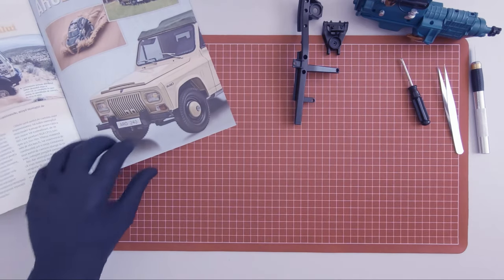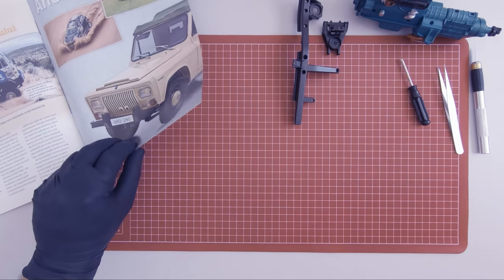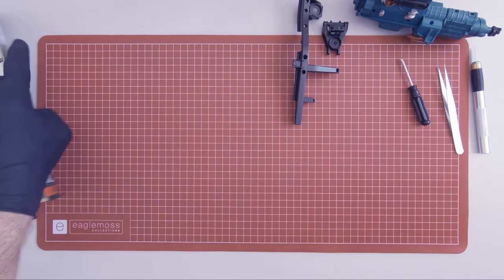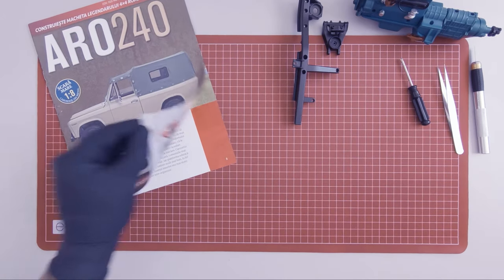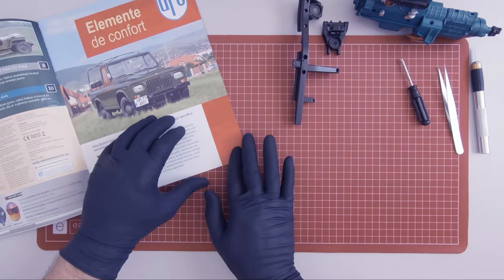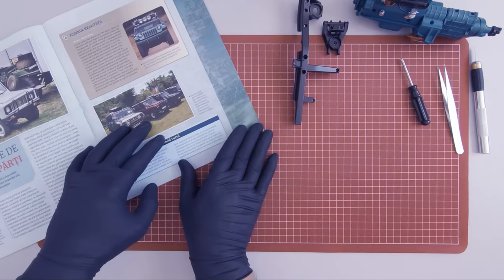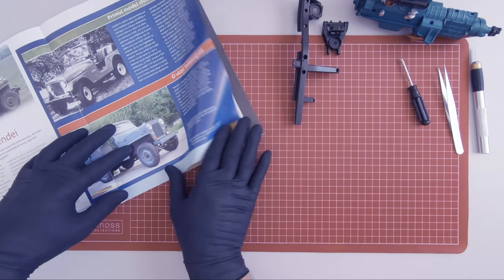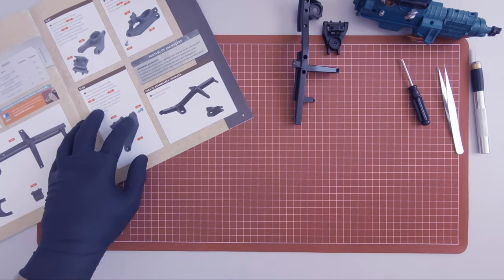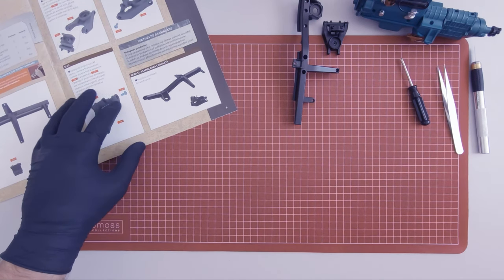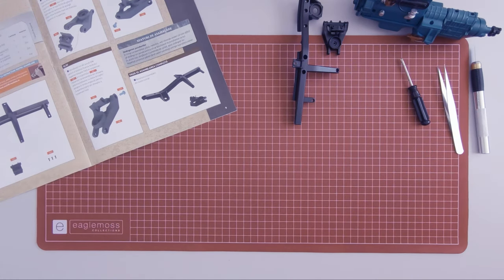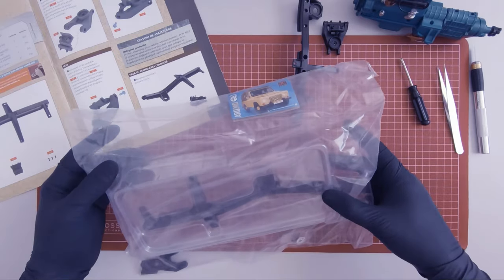And moving on to the final magazine of this episode, Magazine 12. In this magazine we received the front right suspension arm. Here are the components.